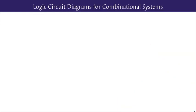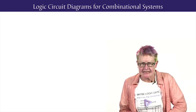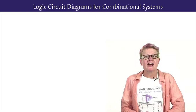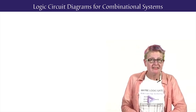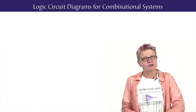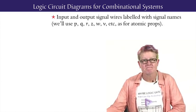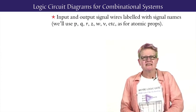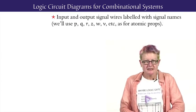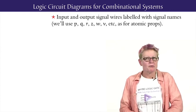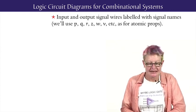We have now introduced the basic systems, the logic gates. Next, we need to set out some rules for putting together these basic building blocks to create bigger, more complex systems. First, we'll clearly identify input and output signal wires with labels, and we use labels for atomic propositions, which are lowercase letters.